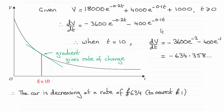So then we need to just substitute when t equals 10 in. That gives us this value here. And it reduces down to negative 634.358 and so on.